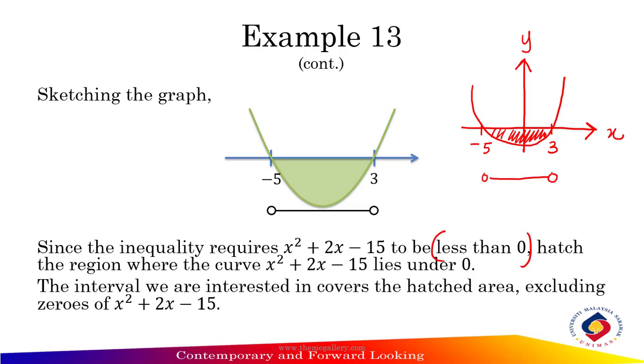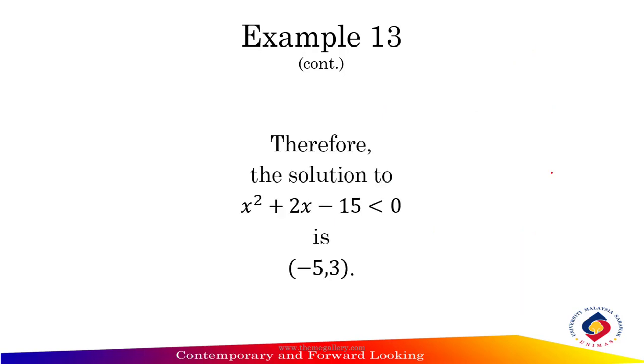The interval we are interested in covers the shaded area excluding the zeros of x² + 2x - 15, which is the open interval from -5 to 3. Therefore, the solution is the open interval (-5, 3).